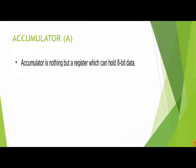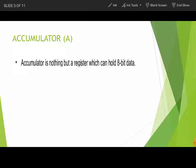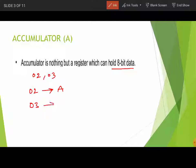Let us start with the accumulator. The accumulator is an 8-bit register which holds 8-bit data. For example, if I have to add two numbers — two and three — we take the value two in the accumulator, so one of the operands will be in the accumulator.